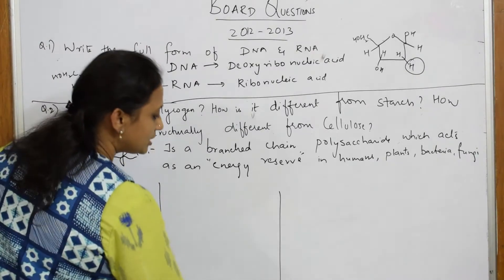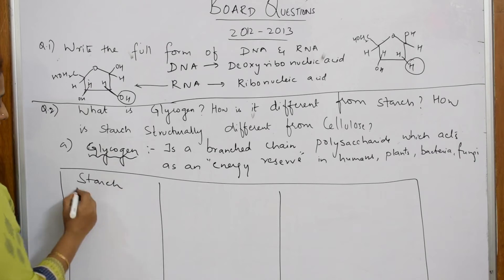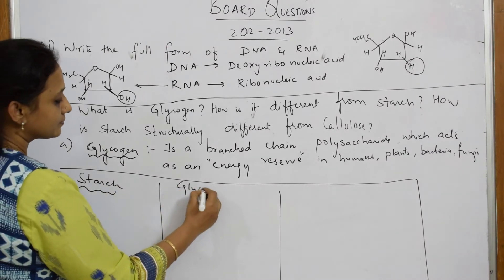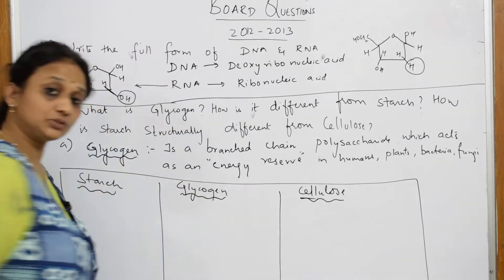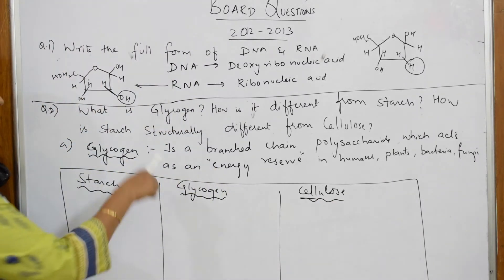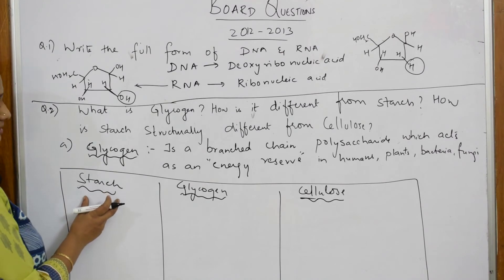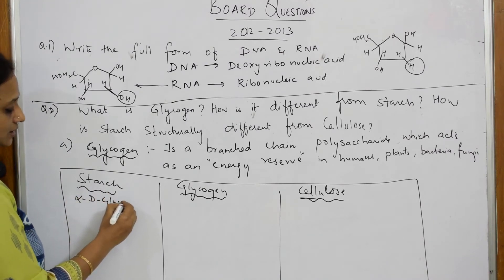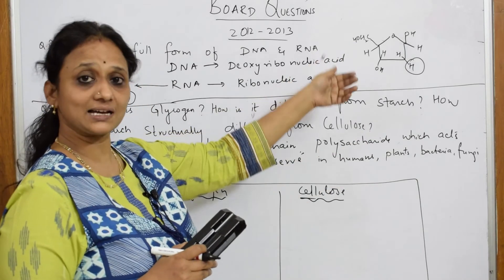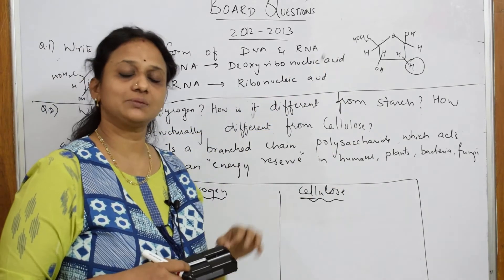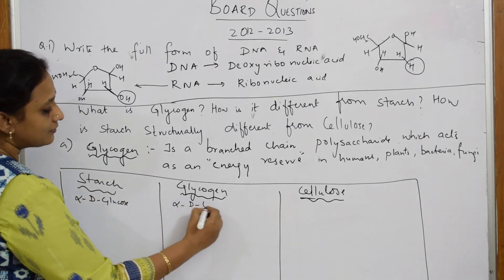Now let us differentiate all three together — starch, glycogen, and cellulose. When speaking about structural differences: starch is made up of alpha-D glucose units, glycogen is also made up of alpha-D glucose units, but cellulose is made up of beta-D glucose units. In alpha, the first carbon has H and OH; in beta, it is OH and H.